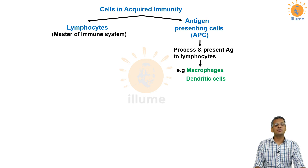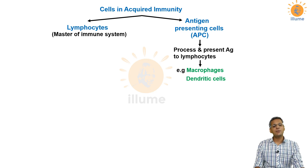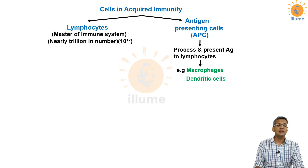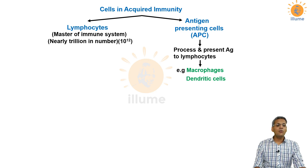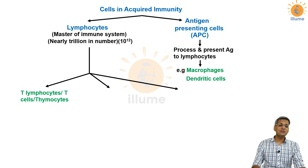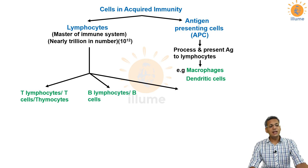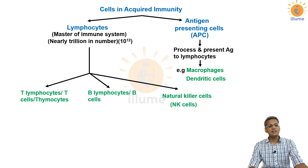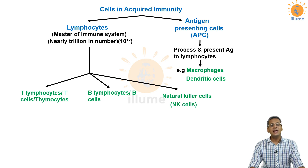Lymphocytes are called the masters of the immune system because they have complete control over it — they stimulate it, suppress it, and are the effector cells of the immune system. In our body there are around 1 trillion (10 to the power 12) lymphocytes. Lymphocytes are of three types: T lymphocytes (T cells or thymocytes), B lymphocytes (B cells), and Natural Killer cells (NK cells).